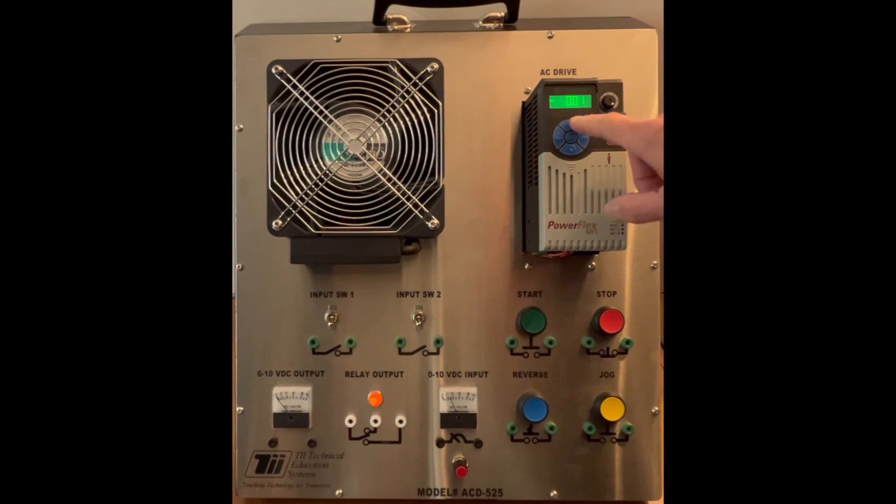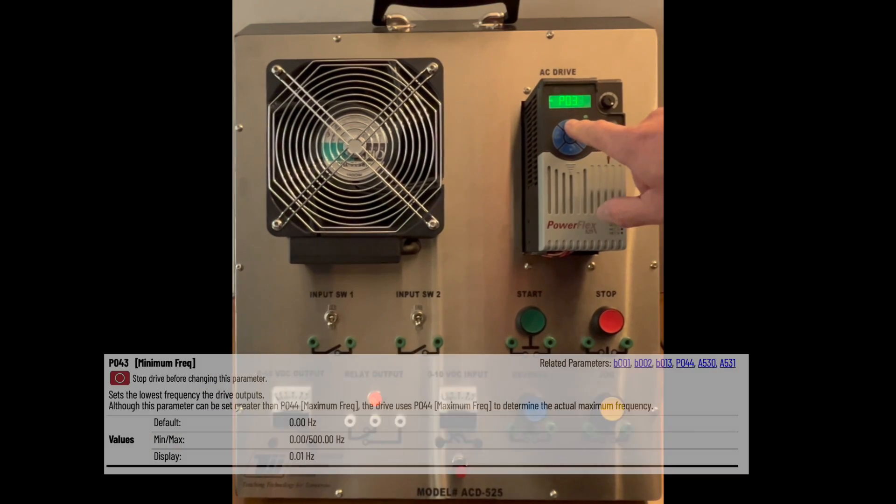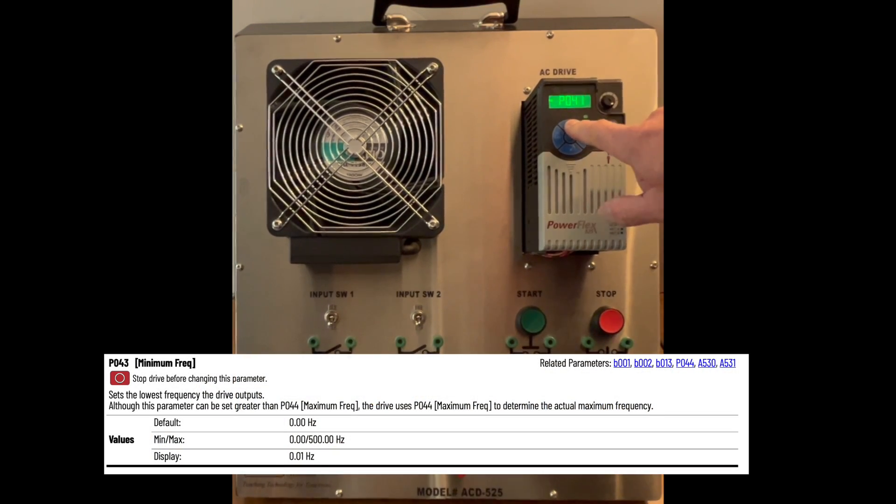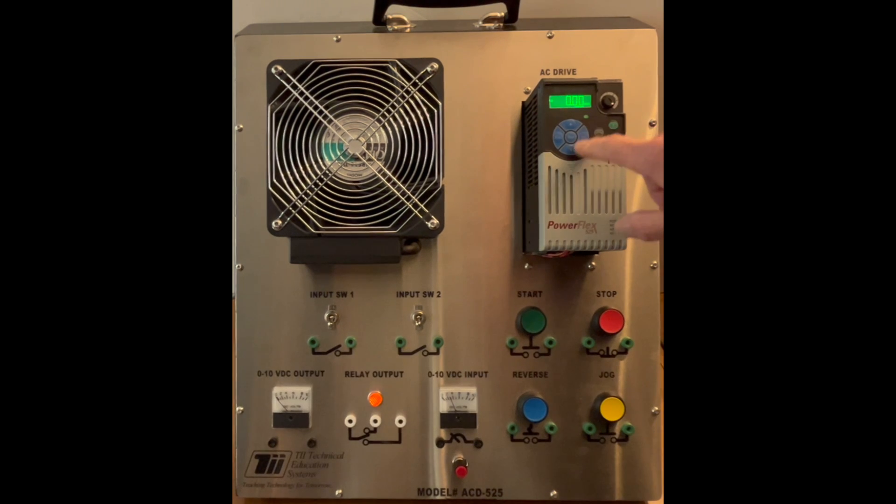you're going to come here, make sure that B is blinking, and go up to P, hit Select, go up to 43. Now, P43 is the minimum frequency. Hit Enter, hit Select, bring it over, we're going to change it to 5 Hz. Then hit Enter here, Escape.